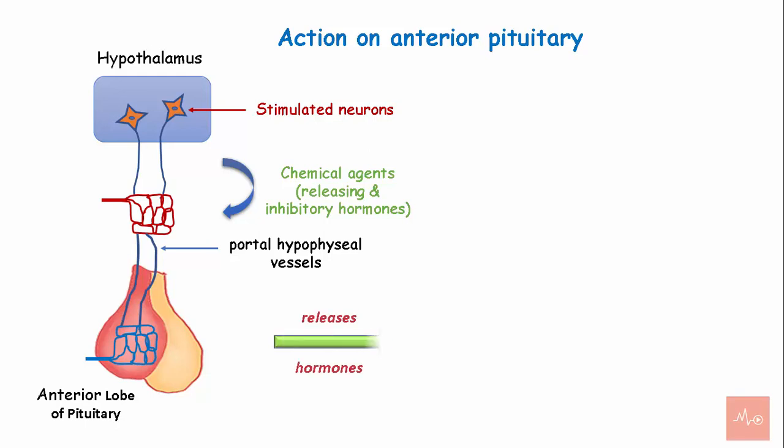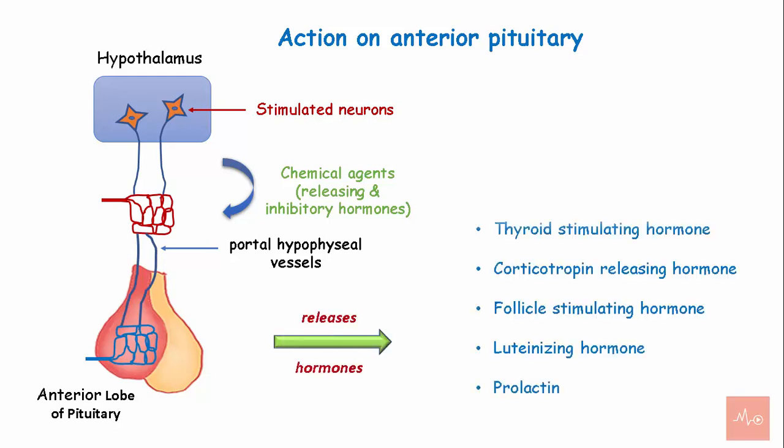These chemical agents influence the anterior pituitary to release the following hormones: growth hormone, thyroid stimulating hormone, corticotropin releasing hormone, follicle stimulating hormone, luteinizing hormone, and prolactin.